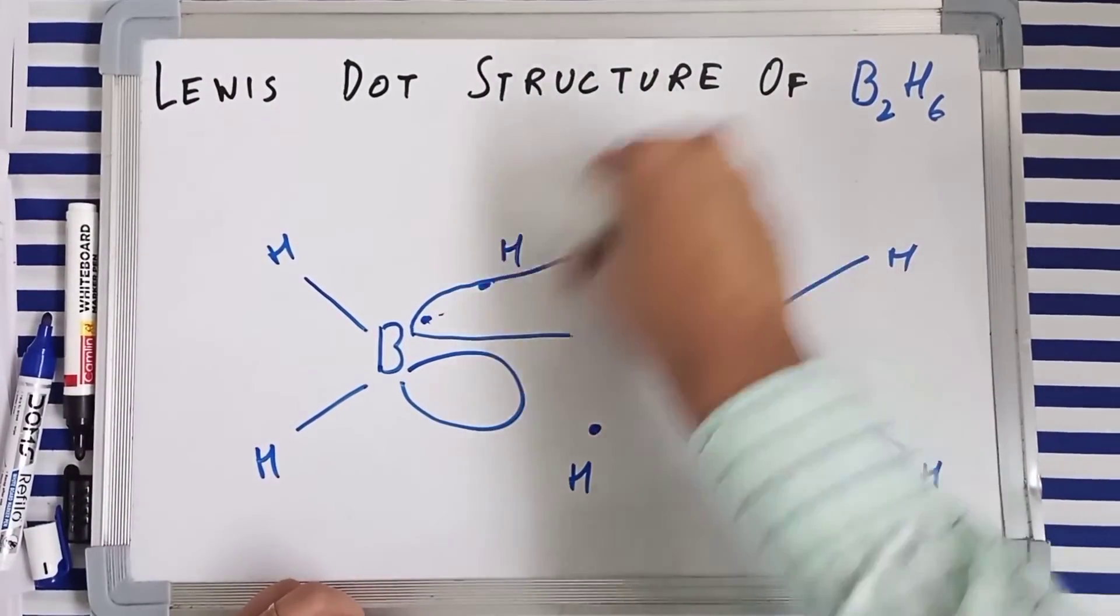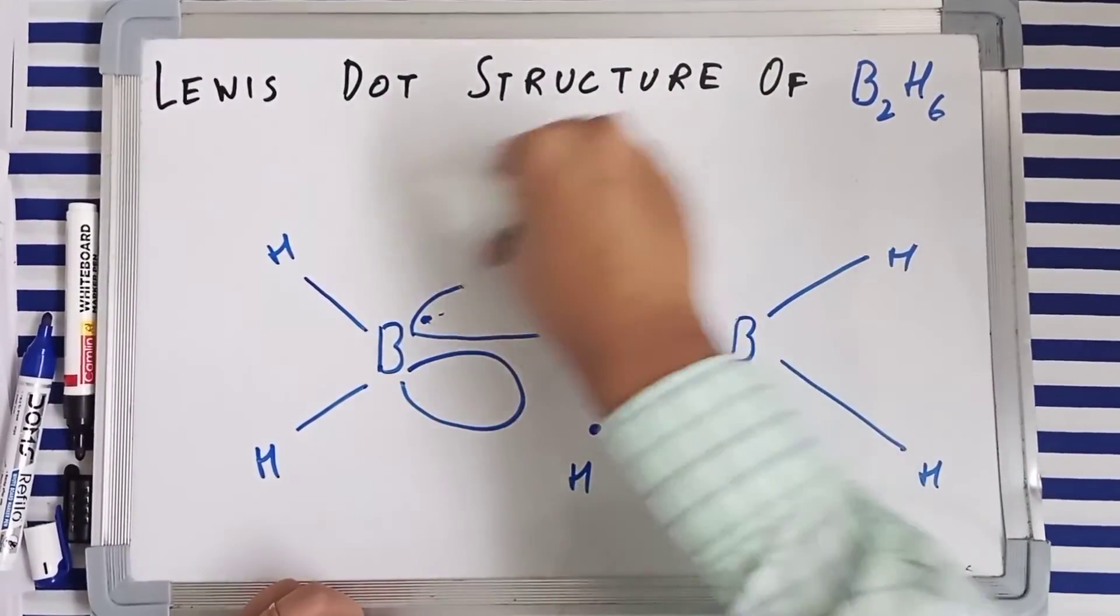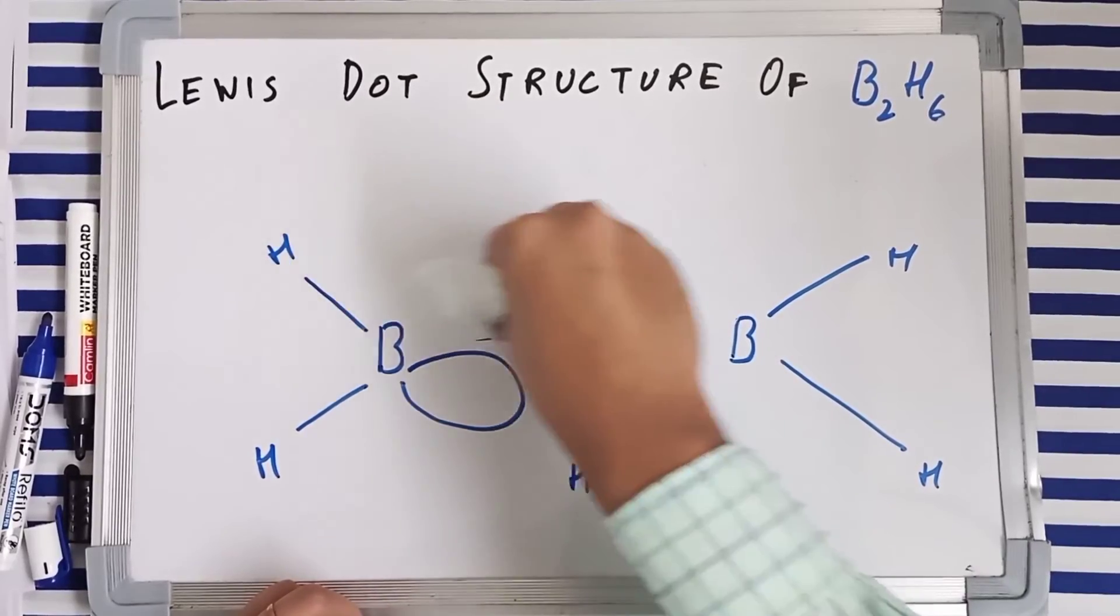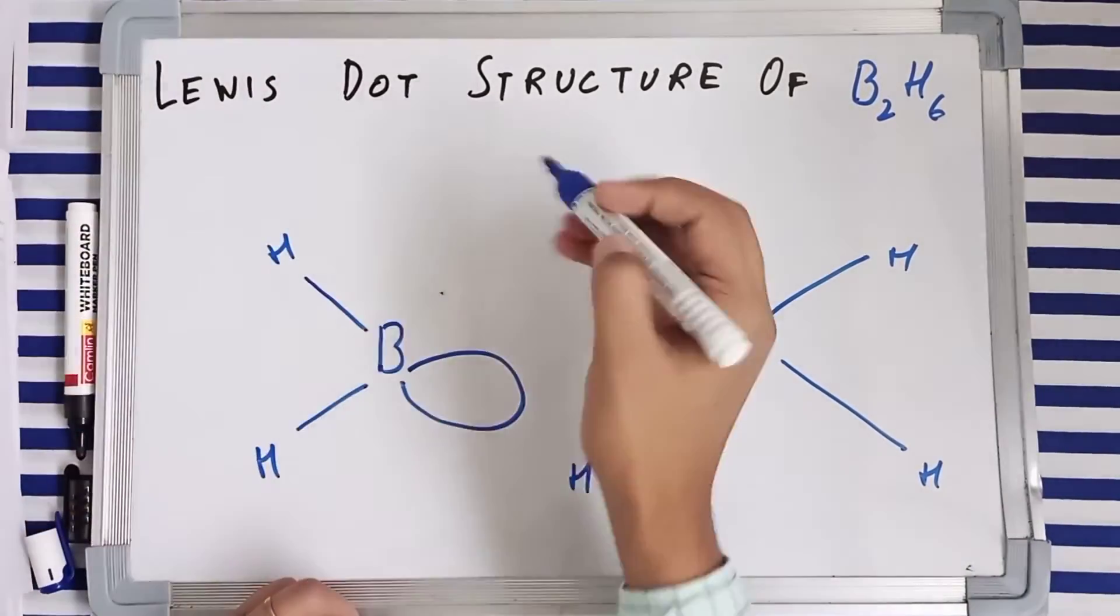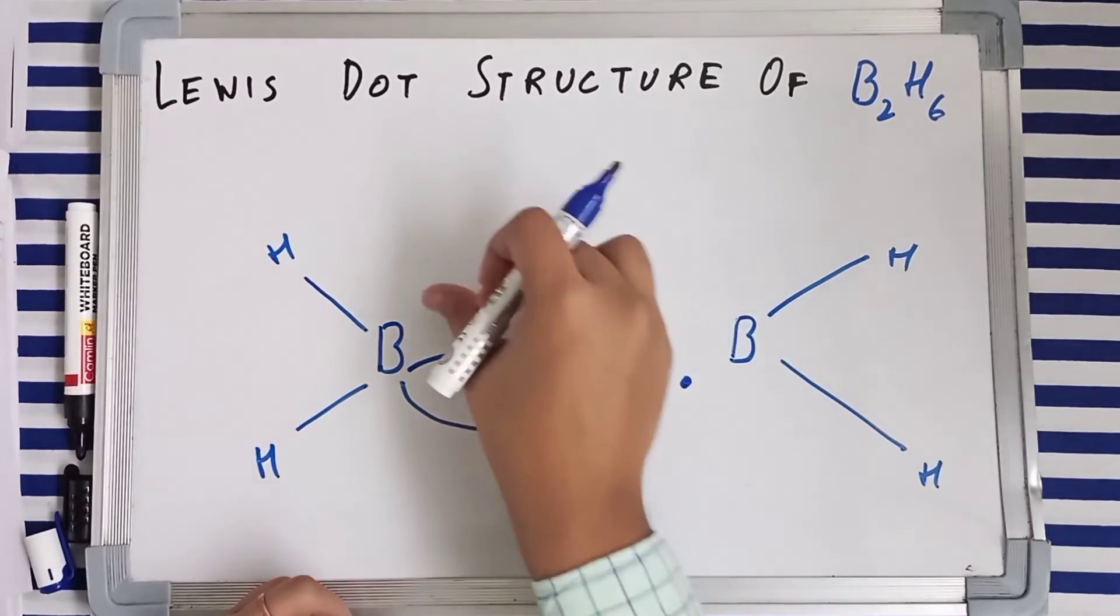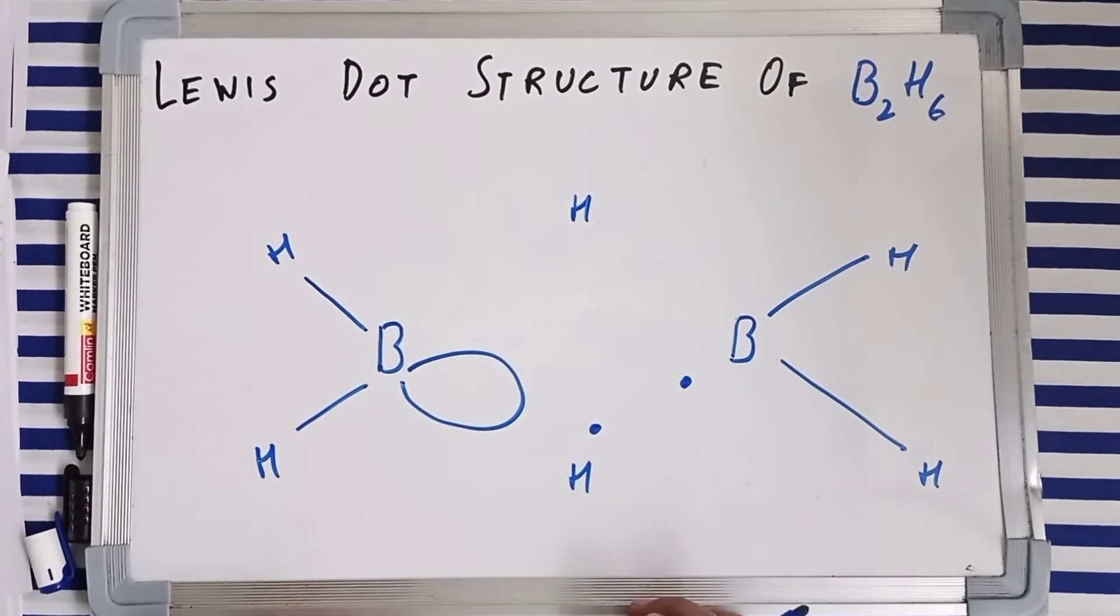You got two electrons and this can be shared like this. For simplification, I can write it like this. See, boron has a vacant 2p orbital, and you had a hydrogen here, and you had two electrons.